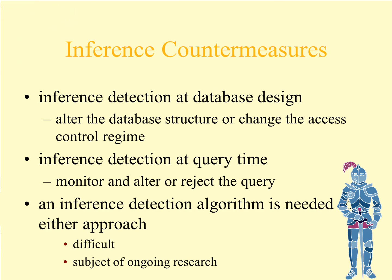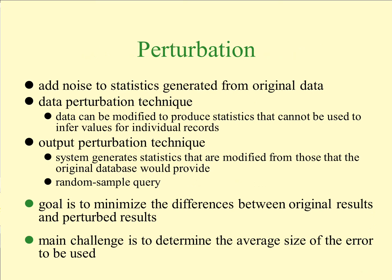How can we get around inference? Countermeasures include rethinking database design, altering the database structure, or changing the access control regime. At query time, we could provide responses in a different order, though a user could just add a sort-by clause to work around that. Detection algorithms may be needed, but this is very difficult because the queries could be run at different times. This is still a subject of ongoing research, and papers are being published on how to combat inference attacks.